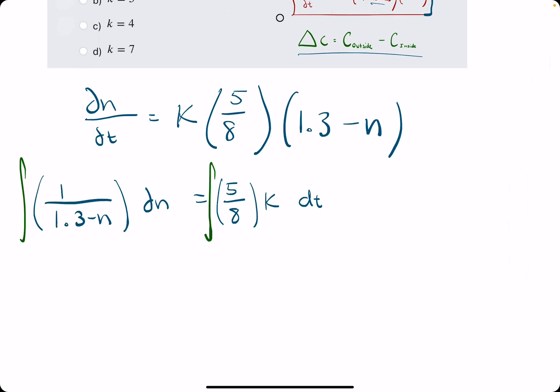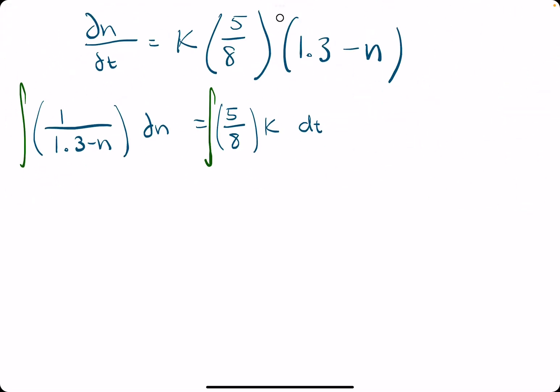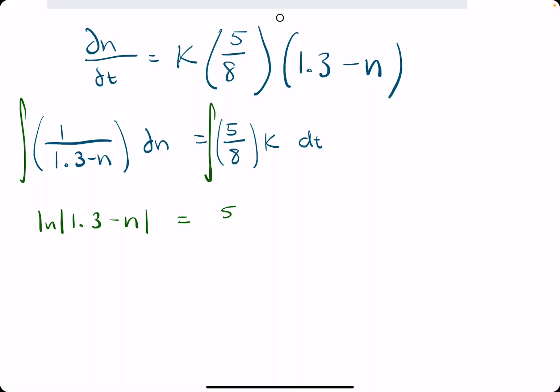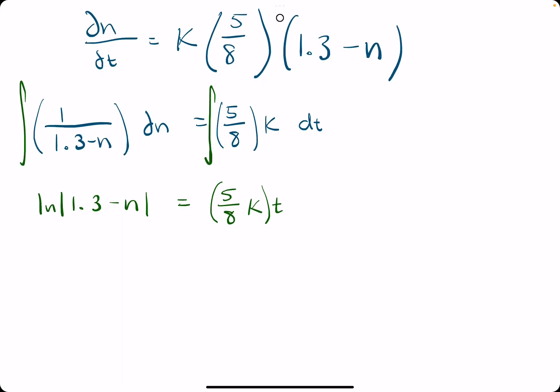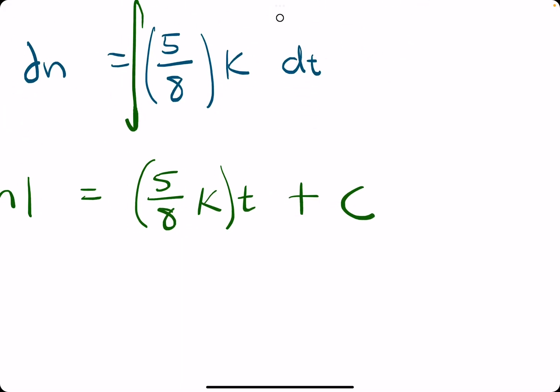So, we integrate both sides. This one always ends up being this natural log of absolute value 1.3 minus n, equals 5 eighths kt. This will always sort of work out this way, too, because 5 eighths k is just a constant. So, an antiderivative of a constant is just that constant times t. And then we add c.